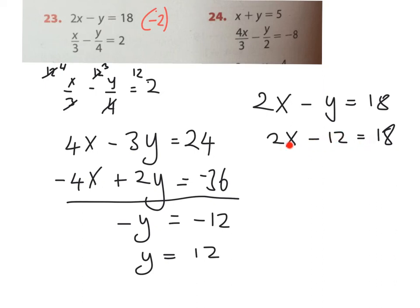Now that we know y = 12, we replace y with 12 in the equation: 2x - 12 = 18. We take the 12 across, which becomes +12, and 18 + 12 gives us 30. If 2x = 30, then x = 30 ÷ 2, which is 15.